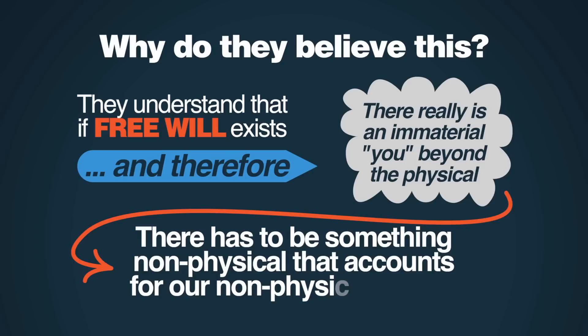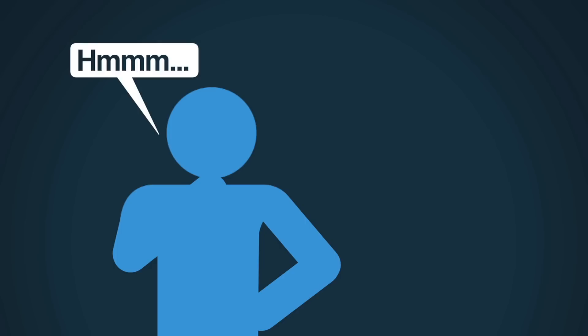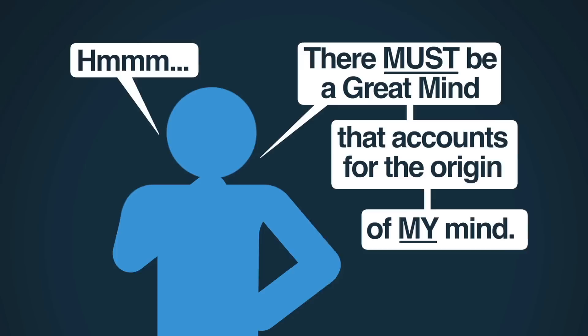Now, when you exercise your free will and you choose to think about all of this, you're going to probably reason, just like I did, that there's a great mind that accounts for the origin of your mind. But again, that's your choice, it's evidence of your free will. I'm Frank Pastore for Prager University.